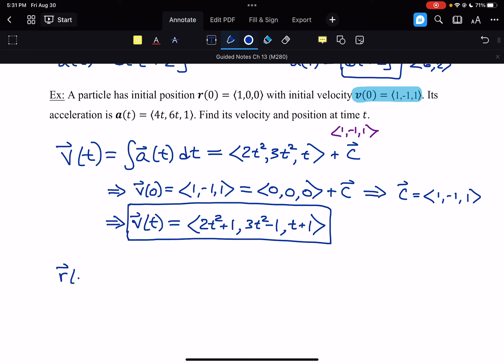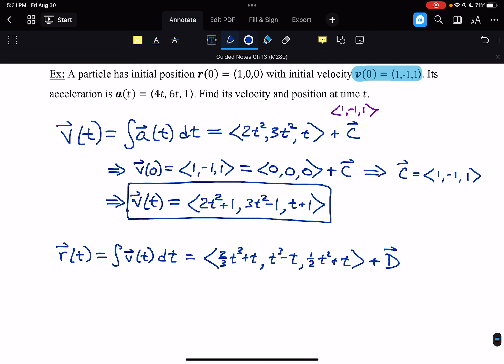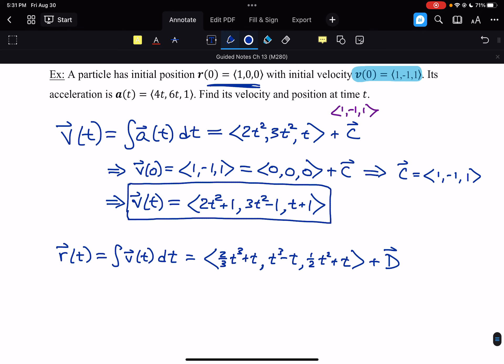To get the position formula, we take the antiderivative of velocity. So integral of v(t)dt gives us (2/3 t³ + t, t³ - t, 1/2 t² + t) plus an arbitrary constant. We already used c, so I'll go ahead and use d. And we do have another initial condition here. We know that initial position is (1,0,0). So we know r(0) = (1,0,0).